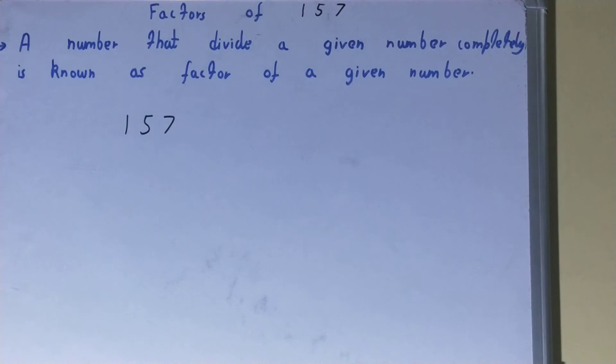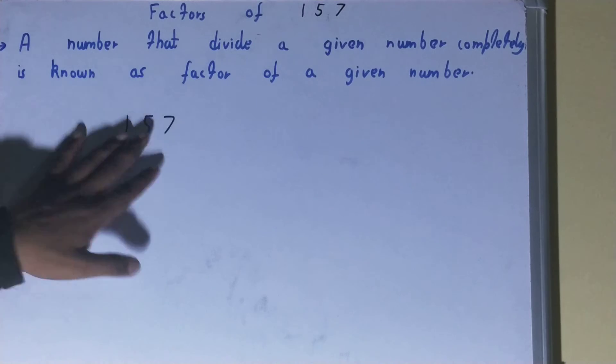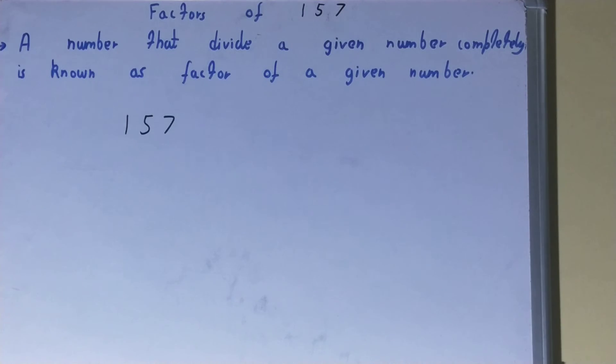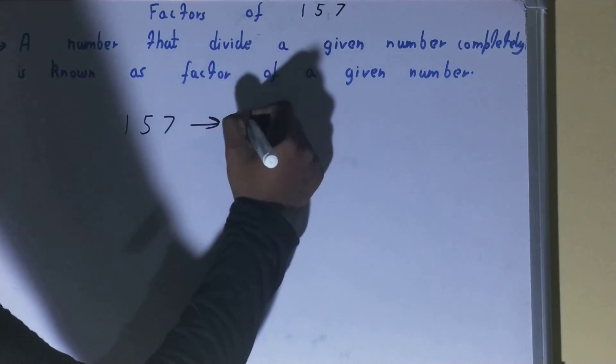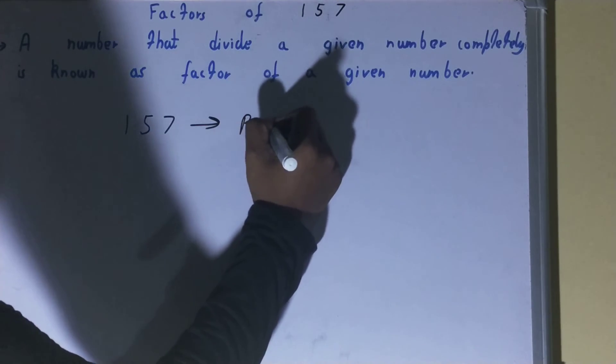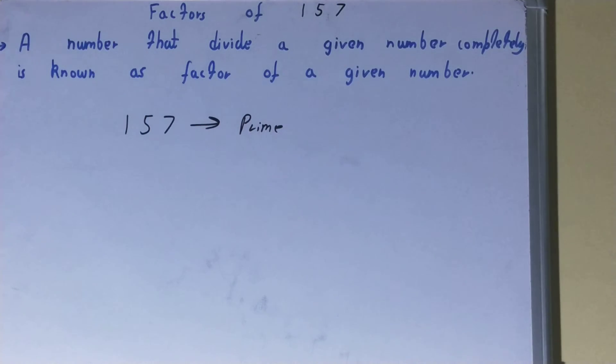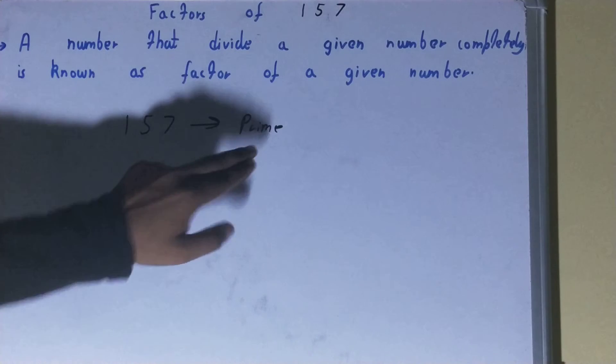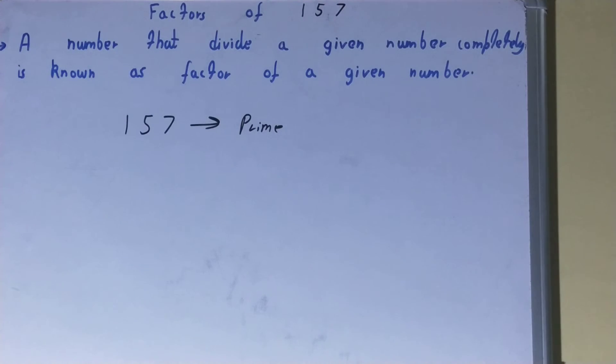If we talk about the number 157, it is a prime number. And prime number has a specialty. What is that? Prime numbers are only divisible by themselves and one only.